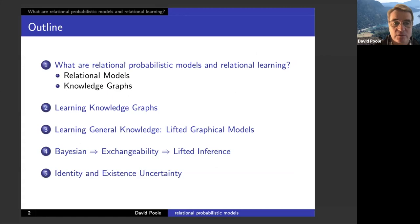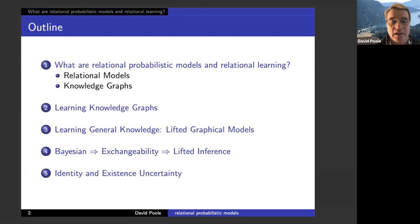I'm going to talk about what relational probabilistic models and relational learning are, explaining them both as relational models and knowledge graphs. I'll discuss recent work in learning knowledge graphs, what is actually learned and how it works, how to learn general knowledge using lifted graphical models, and how if you want to be Bayesian and treat probability as a function of your knowledge, you should do lifted inference.